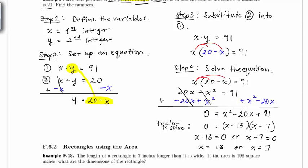And sure enough, 13 times 7 is 91 and 13 plus 7 is 20. So therefore, the two numbers are 13 and 7.